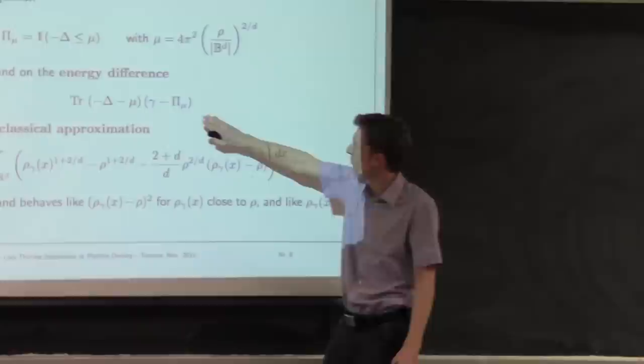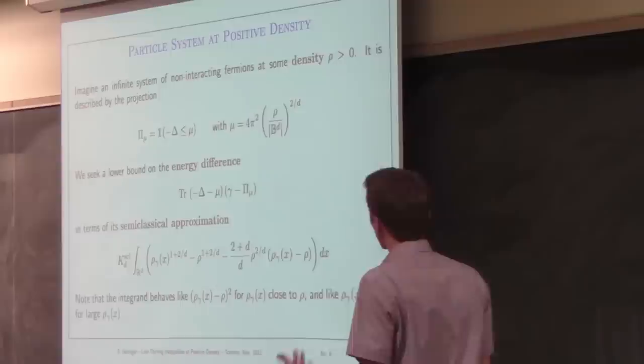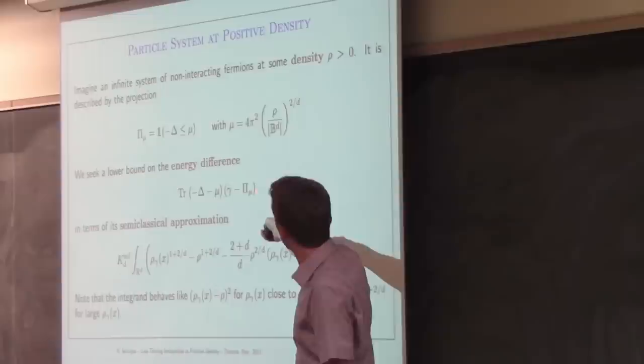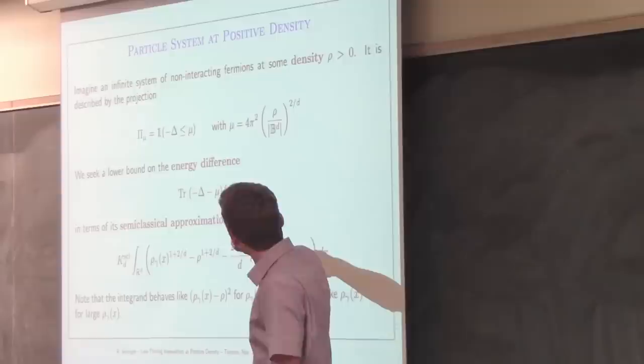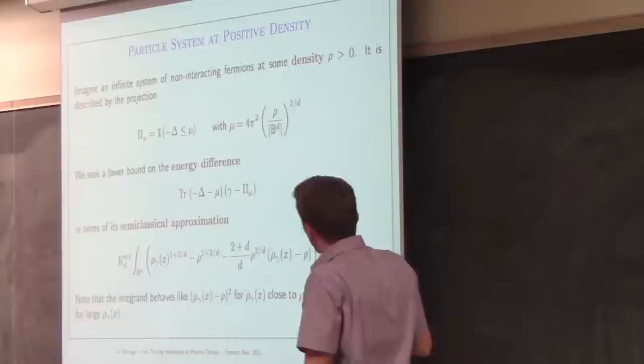The expression of interest is the trace of (−Δ − μ) times (γ − π_μ), where π_μ is the Fermi sea projection and γ is a perturbation of it. Formally, π_μ minimizes this expression, so subtracting it gives a non-negative quantity — the energy cost to change the state from π_μ to γ. The background density ρ is just a constant related to μ by ρ = μ^(d/2) up to explicit constants. Asymptotically at infinity, the density of γ returns to ρ; locally it may change.